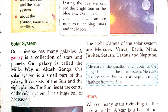Our solar system is a small part of the galaxy. There are many other solar systems that are part of the Aakash Ganga galaxy. Our solar system consists of the sun and eight planets. The sun lies at the center of the solar system — it is a huge ball of hot gases, and all the other planets revolve around it.